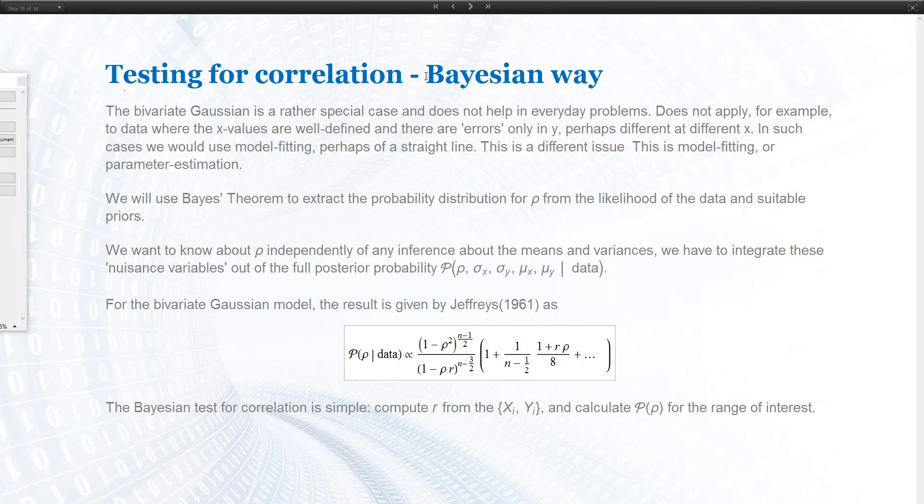You do this by applying this posterior probability. That's been first presented by Jeffreys, so it's also called Jeffreys posterior or Jeffreys method. What you need to do is compute your sample correlation r, and then this formula gives you the probability that the population has a value of rho equals something.